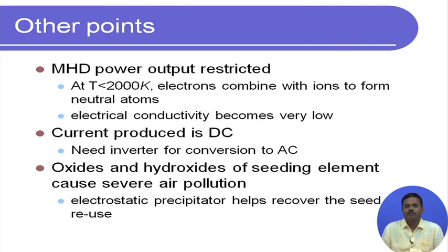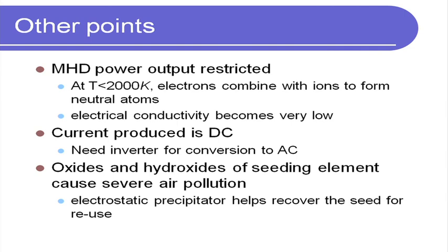That brings us to the end of magnetohydrodynamics. We started by looking at what MHD is, based on Faraday's law of electromagnetic induction: a moving conductor and a perpendicular magnetic field give rise to a DC voltage in the third direction. The moving conductor is achieved by ionizing hot combustion gases — at very high temperature some electrons gain enough energy to fly out, and seeding with cesium or potassium at low concentrations brings the ionization temperature down to below 3000°C, which modern furnaces can withstand.